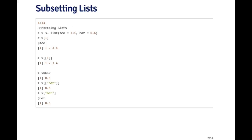Subsetting a list is a little bit different because you can use the double bracket or the dollar sign operator. You can also use the single bracket operator. Here I've got a list where the first element is a named element called foo — it's a sequence one through four. The second element is named bar, and it's the number 0.6. So this is a list with two elements. I can extract the first element using the single square bracket, and remember the single bracket always returns an element that's the same class as the original. So if x is a list, then x bracket one is going to be a list too — a list that has an element called foo, which is a sequence one through four.